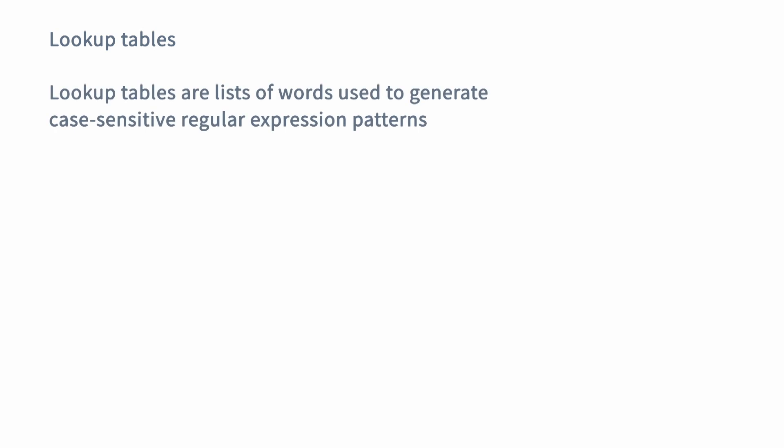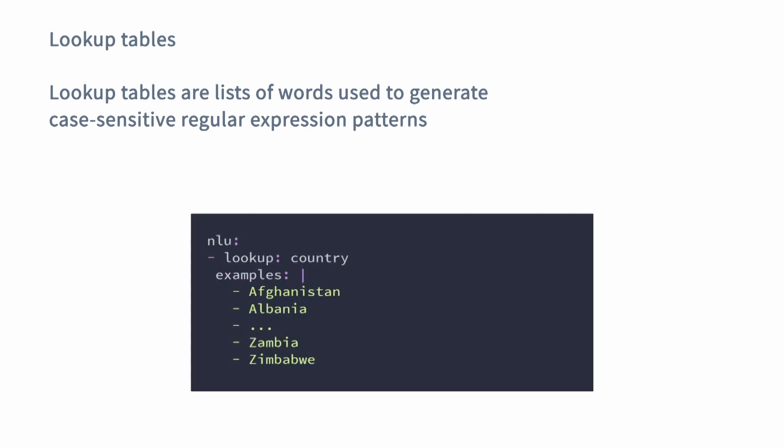Another very powerful feature of Rasa is lookup tables. Lookup tables are lists of words that can be used to generate case-sensitive regular expression patterns. With lookup tables, you can enhance entity extraction for details that have a set of known possible values. For example, you can use a lookup table to enhance the entity extraction for country names. To achieve that, include a list of all countries in the world in your nlu.yaml file under the section lookup.